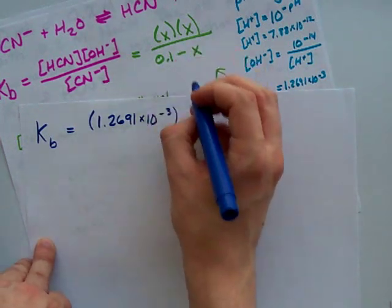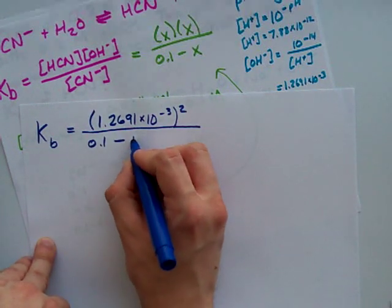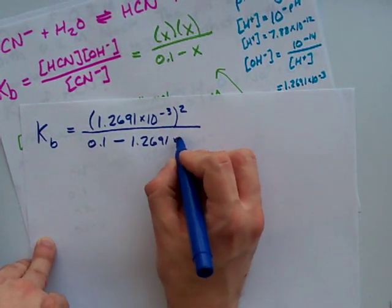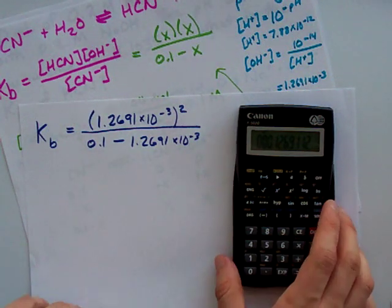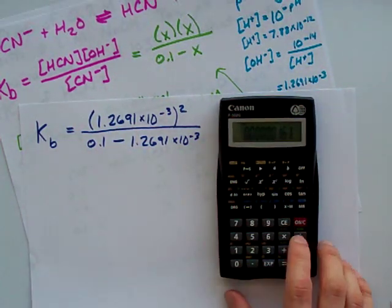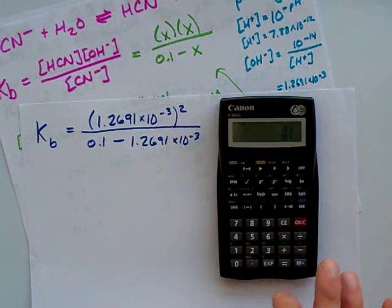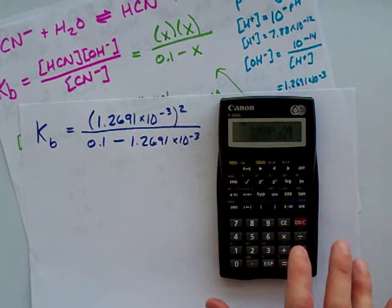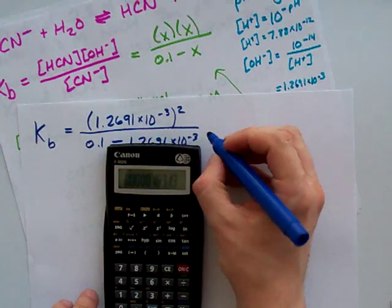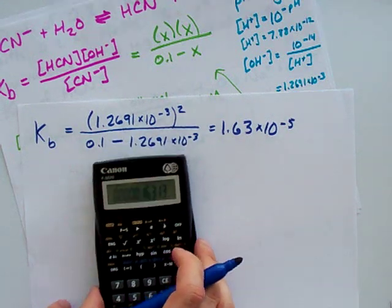...all over 0.1 minus whatever I got for that X. And again, I'm carrying like 4 decimal places because it's a big deal. Alright, here we go. So, I take that number squared and divide it by 0.1 minus 1.2691 times 10 to the power of negative 3. And what I end up with is 1.63 times 10 to the negative 5 for my KB. Beautiful.